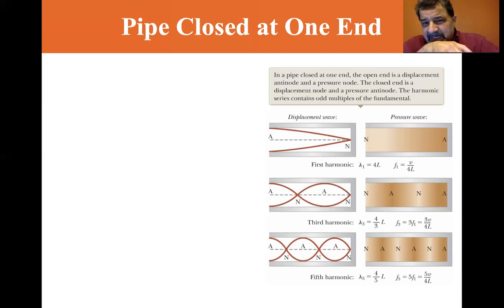The harmonic series contains odd multiples of the fundamental. So in this first harmonic, you're only looking at a quarter wave of the total wavelength. In the third harmonic, it's three quarters of a wave. In the fifth harmonic, it's five quarters of a wave. So you can see how they're produced, and we're actually going to do this in the air column resonance experiment.